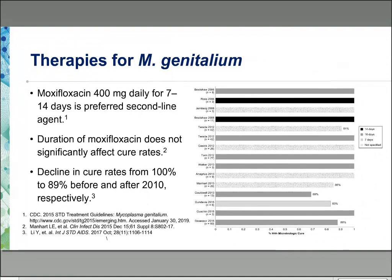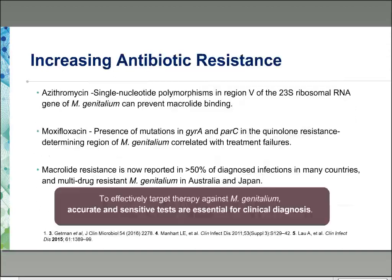Moxifloxacin at 400 milligrams daily for seven to fourteen days is the preferred second-line therapy. There is no significant difference between seven, ten, or fourteen days of treatment. However, there is a concerning decline in cure rates from one hundred percent before 2010 down to eighty-nine percent now, making moxifloxacin also increasingly worrisome as a treatment option for this pathogen.